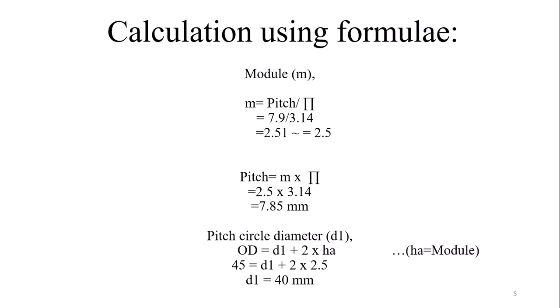Now calculate the pitch based on our considered module, that is 2.5, which equals module times pi. So 2.5 times 3.14 equals 7.85mm. Accordingly you can calculate the pitch circle diameter.